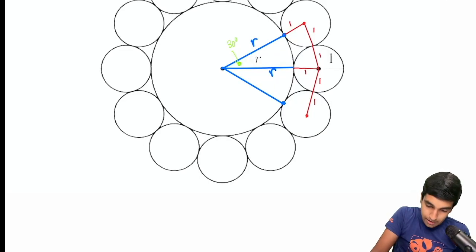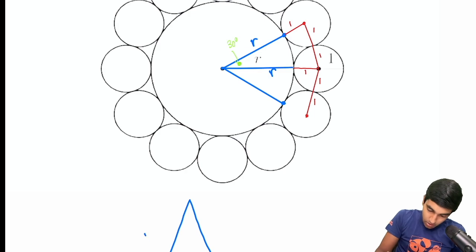So we can even draw a separate diagram out here, because this is literally a very simple problem in itself. r plus 1, r plus 1, and this angle is 30 degrees.